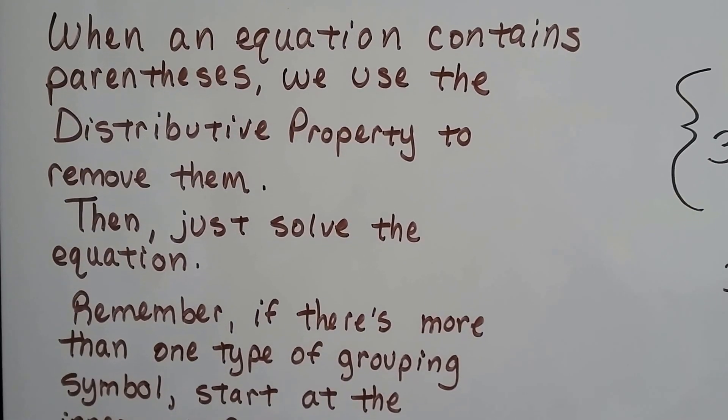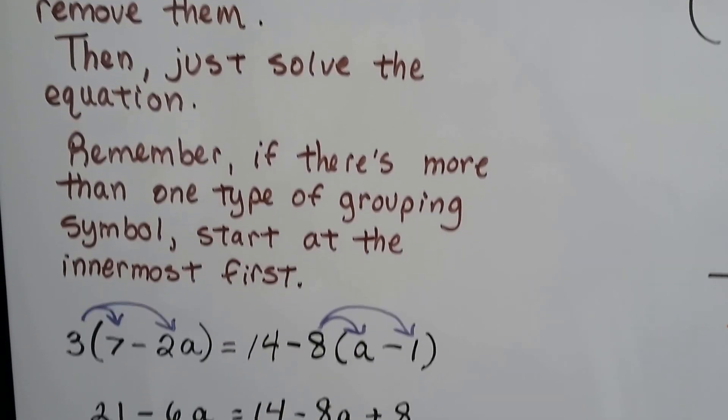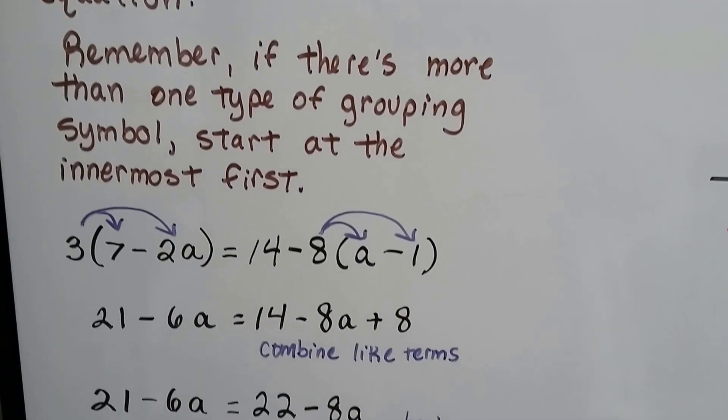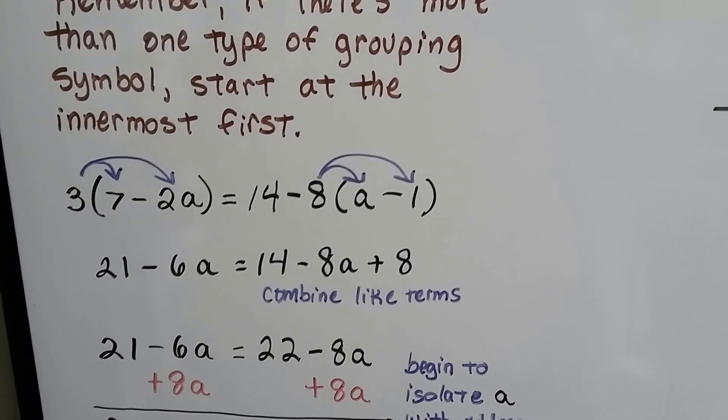When an equation contains parentheses, we use the distributive property to remove them so we can solve the equation. Remember, if there's more than one type of grouping symbol, then you start with the innermost one first.